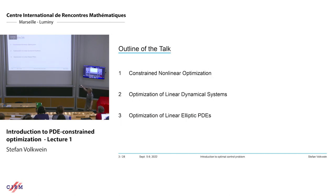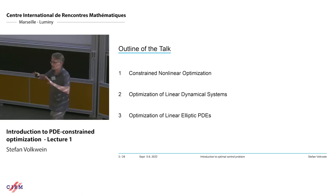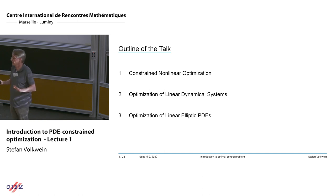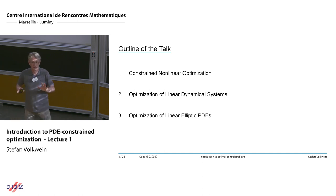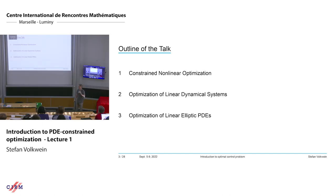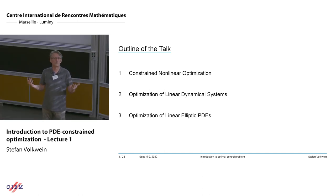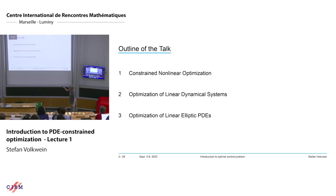What I would like to do today is to bring us to a level where I start with constrained optimization, finite dimensional, and hopefully we recover something you learned in some classes. Then in the second part of this talk I go to linear dynamical systems — I take an ODE and try to do what we can do from the optimization point of view. I hope to start with the linear elliptic PDE, maybe we have to make a break and continue tomorrow. Tomorrow I would also like to go to the heat equation, some time-dependent PDE. At the end, the idea is that we are on a level where you can enter the domain decomposition lectures where optimization is an issue.